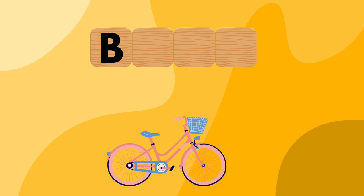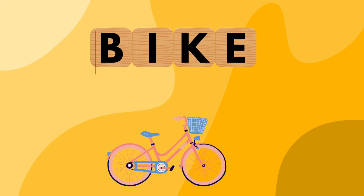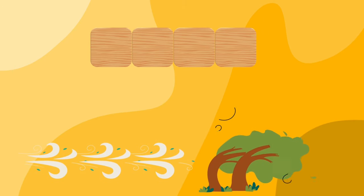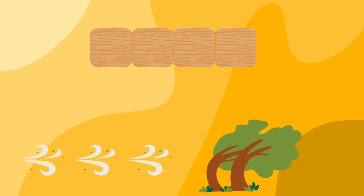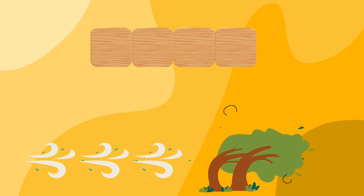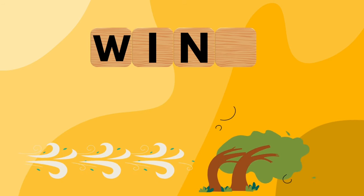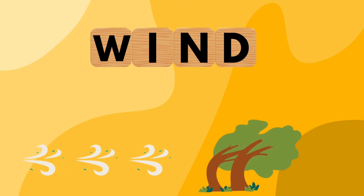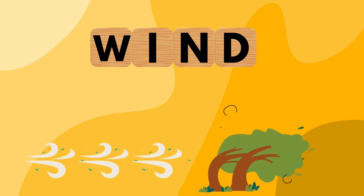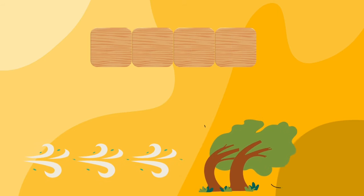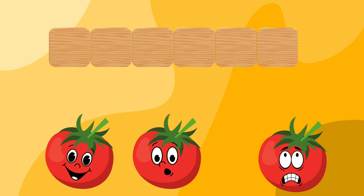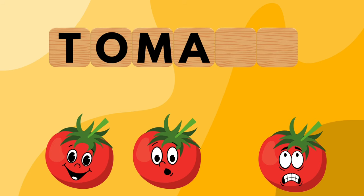R, B, I, K, E — Bike. W, I, N, D — Wind. T, O, M, A, T, O — Tomato.